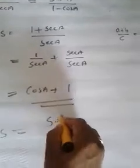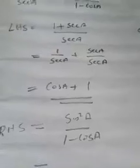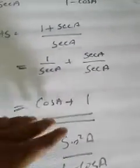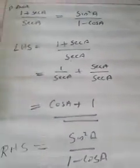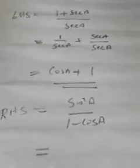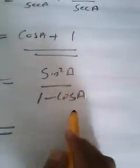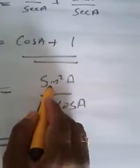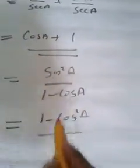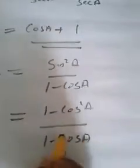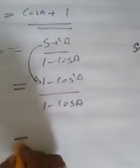Now take the RHS side. RHS says sin squared A divided by 1 minus cos A. The numerator is in terms of sine squared and the denominator is in terms of cos A. What I am going to do is replace sin squared A by 1 minus cos squared A, keeping the denominator 1 minus cos A as it is.